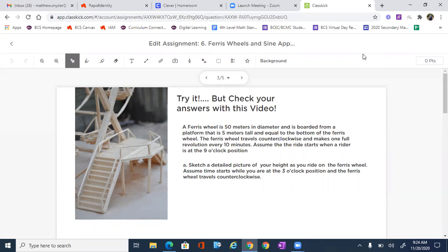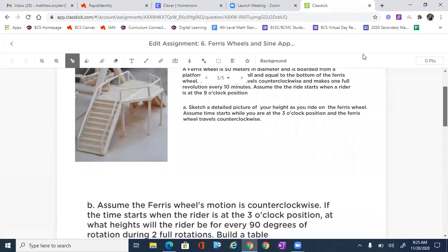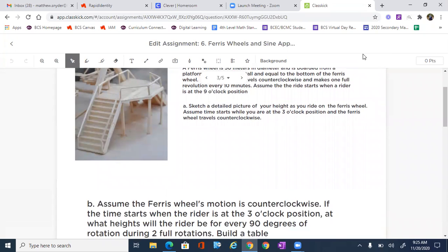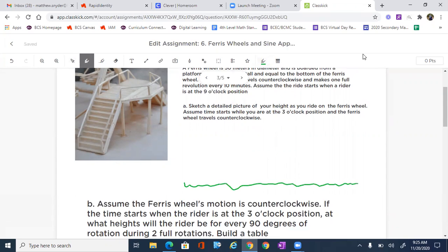Assume that the ride starts when a rider is at the nine o'clock position. We're going to go through this whole process. We're going to sketch a picture and make a table, make a graph, and then make an equation, graph it on Desmos. So the first thing I want to do is sketch this idea of what's happening. We've got a Ferris wheel and we've got ground level right here. We've got a Ferris wheel that is not with the bottom on the ground.